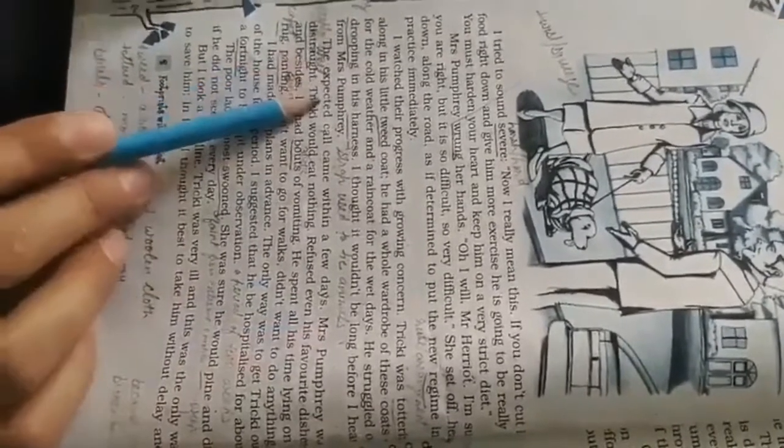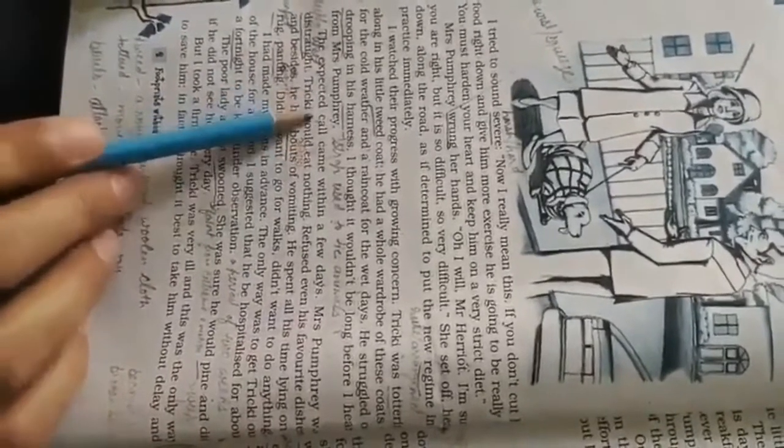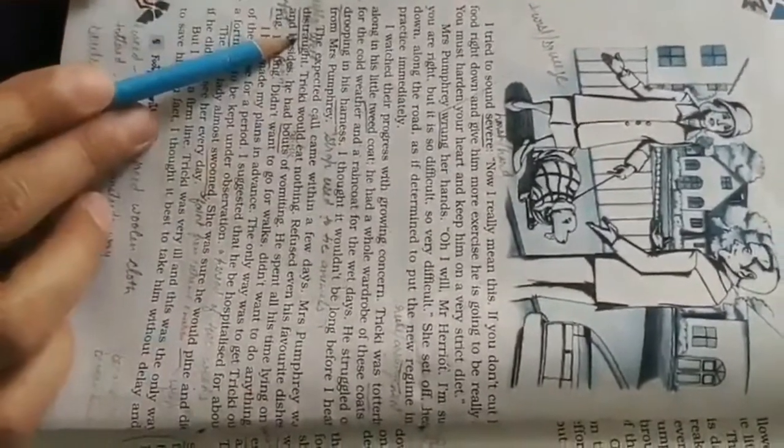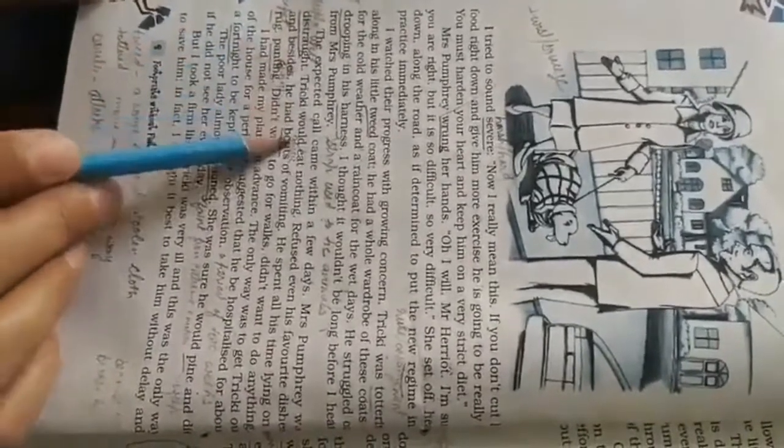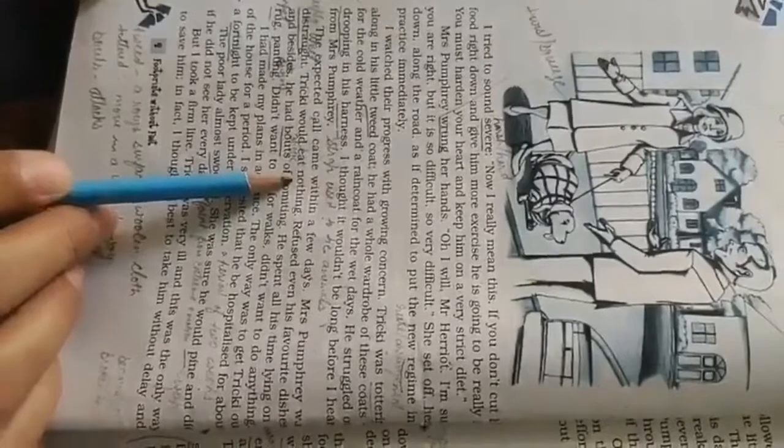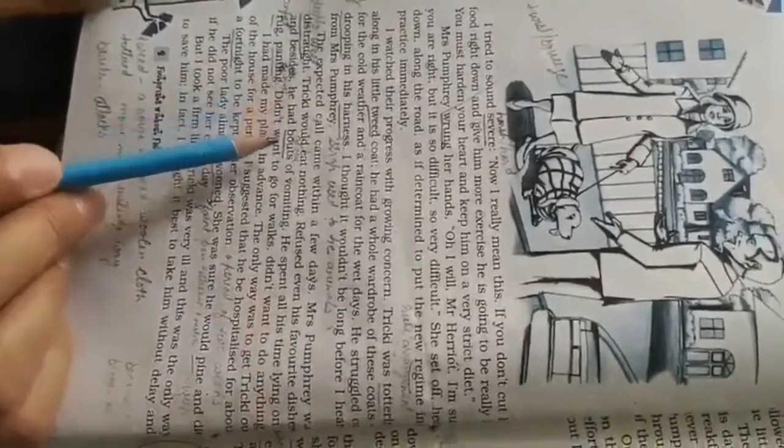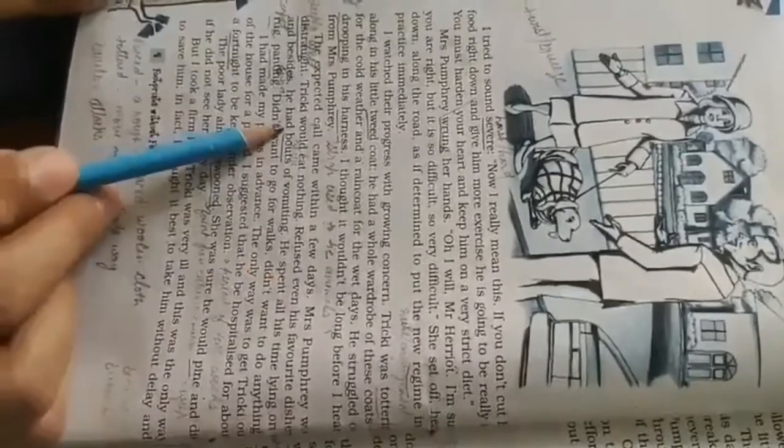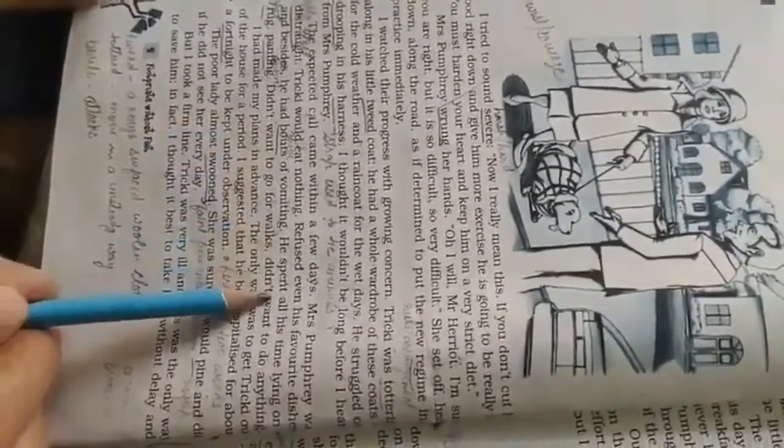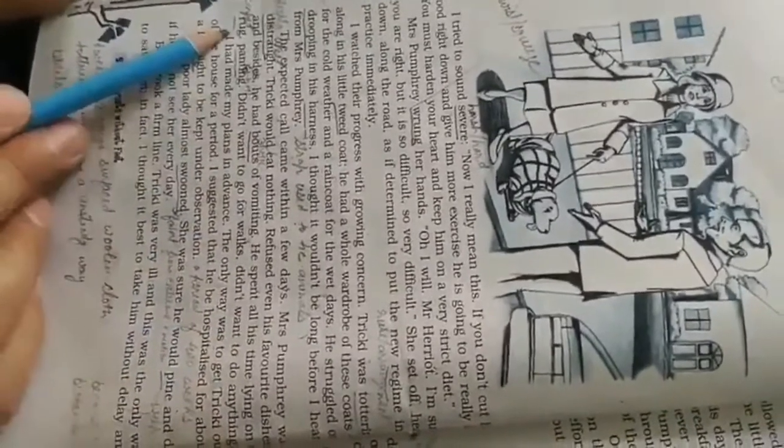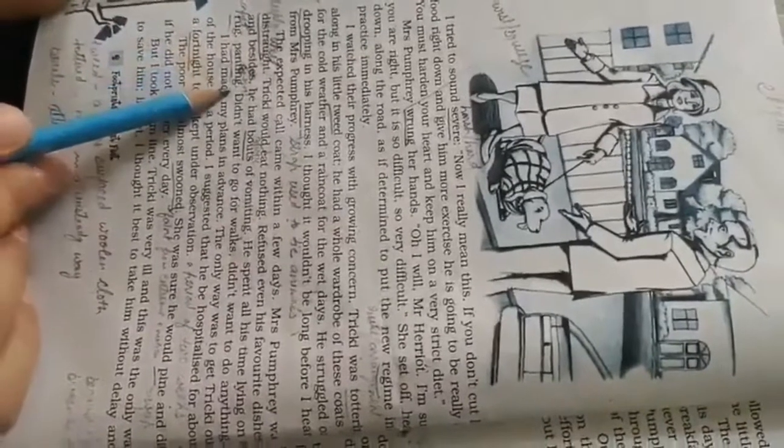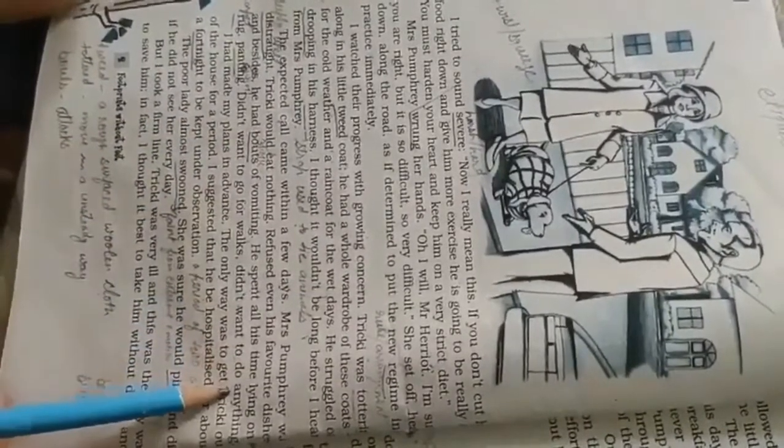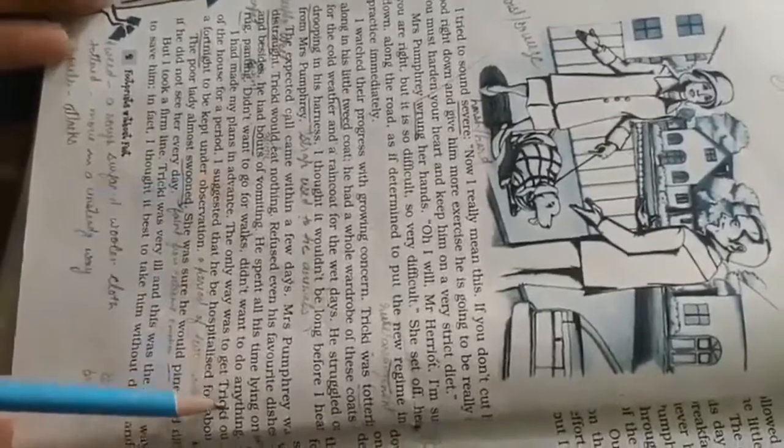The expected call came within a few days. Mrs. Pumphrey was distraught, meaning deeply upset. Tricky would eat nothing, refused even his favorite dishes, and besides he had bouts of vomiting. He spent all his time lying on the rug, panting. Didn't want to go for walks, didn't want to do anything.